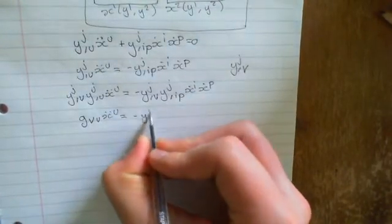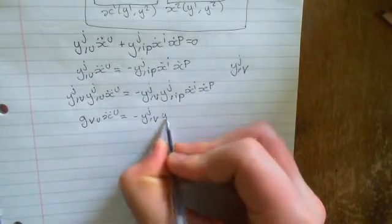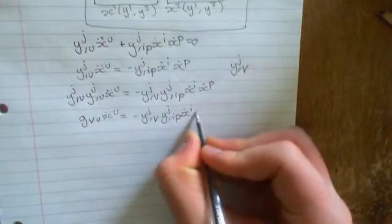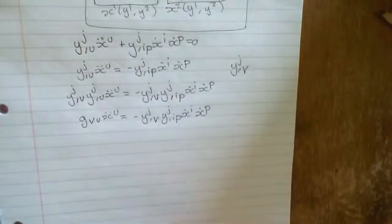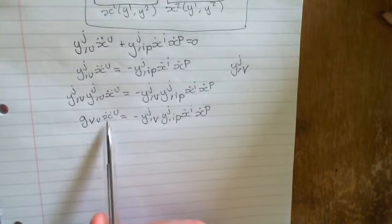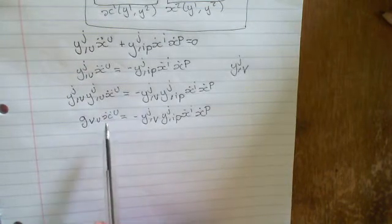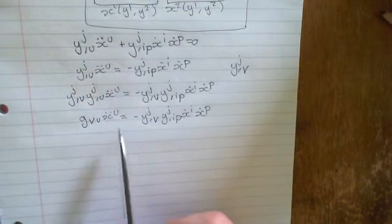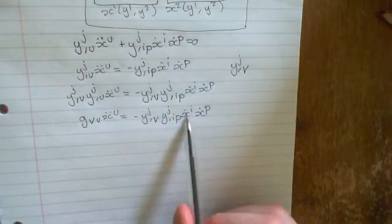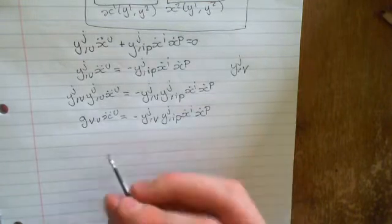And now what we want to do is we want to isolate this term, because we want the differential equation as d²x as a function x dx/ds squared, as a function of the first derivatives.